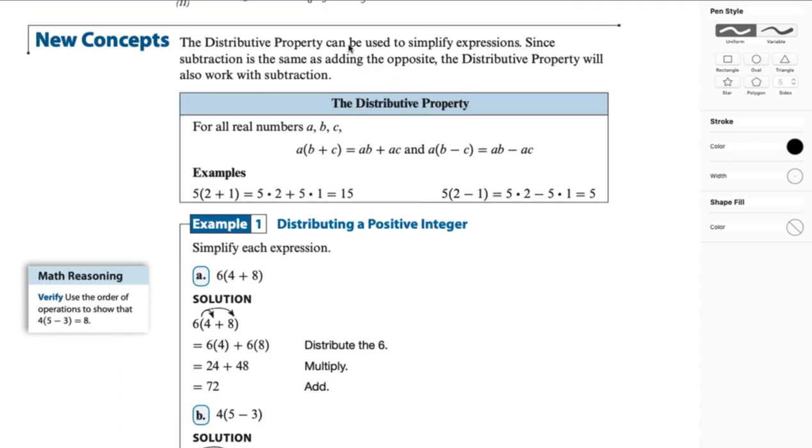So the distributive property is something that we've probably seen before. It's this relationship here. It says that if I have some number times the sum of two numbers, I can rewrite it as A times B plus A times C. I could also do distribution over subtraction. So A times the quantity of B minus C becomes AB minus AC. We can do a couple of examples to demonstrate how it works.